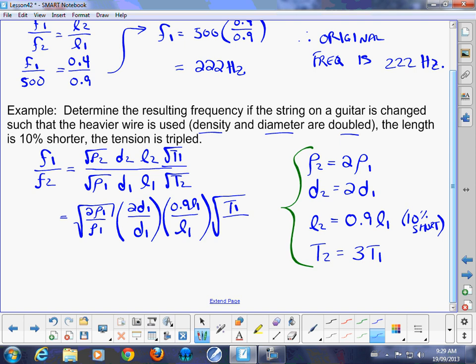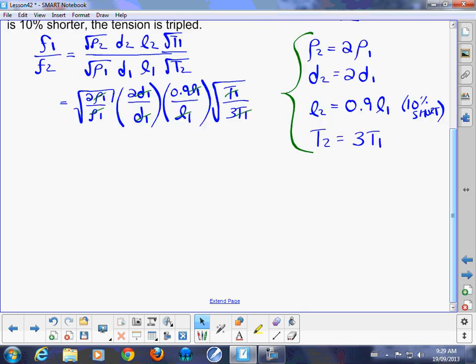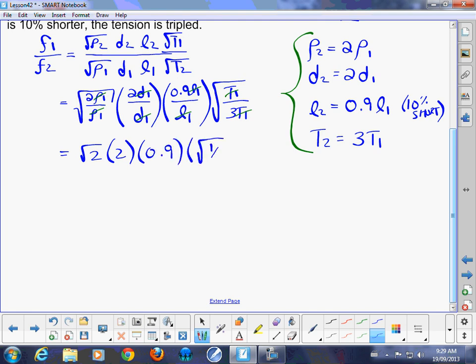When you write it in that format, all of those variables are unknown. We don't actually have to know the numerical value for them. They all cancel out. So what you're really doing is you are multiplying root 2 times 2 times point 9 times the square root of a third. And when you go through and plug that in, we find out that our frequency, f1 over f2, that's what it's been on this side of the equation all along, is equal to 1.5.